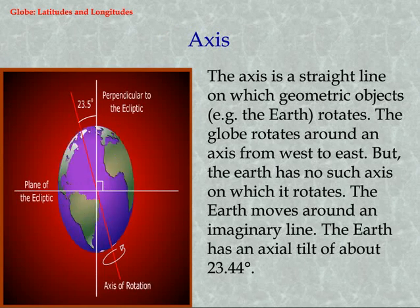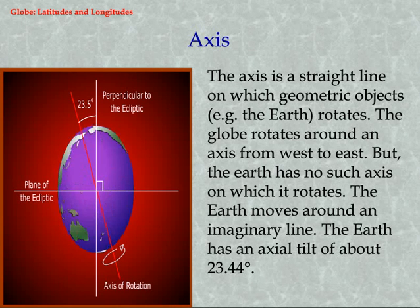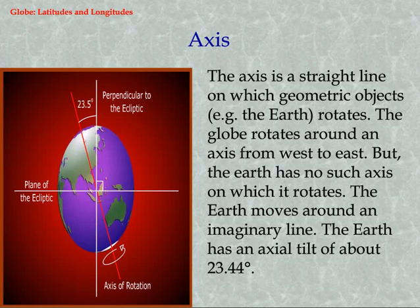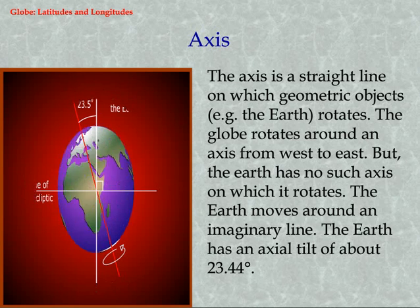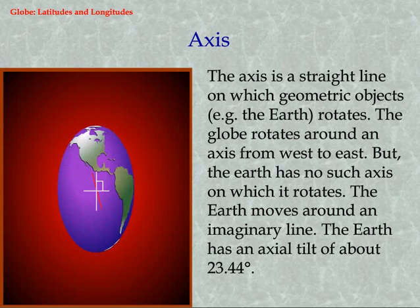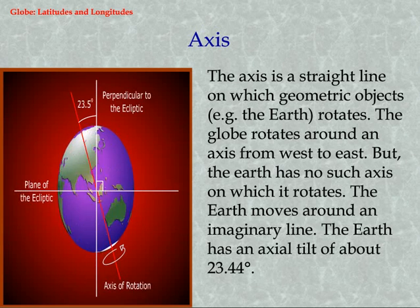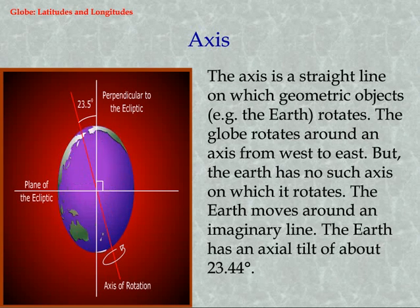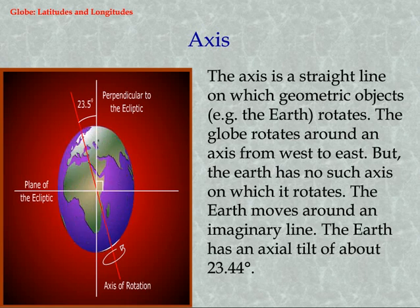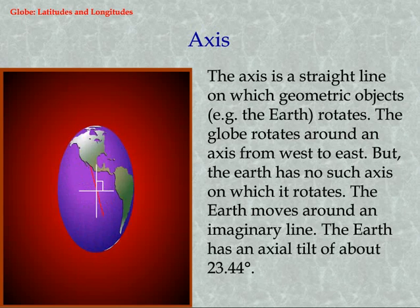Axis. The axis is a straight line on which geometric objects, for example the Earth, rotates. The globe rotates around an axis from west to east. But the Earth has no such axis on which it rotates. The Earth moves around an imaginary line. The Earth has an axial tilt of about 23.44 degrees.